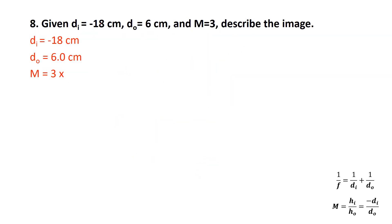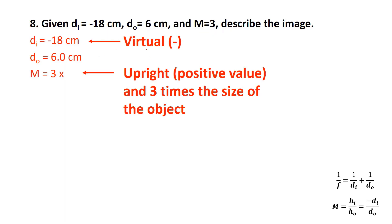Additional information: If given DI = −18 cm, DO = 6 cm, and M = 3, describe the image. The negative DI tells me it's virtual. The positive magnification tells me it's upright — and upright and virtual always go together. The magnification of 3 means the image is 3 times the size of the object. Also, 18 is 3 times 6, so mathematically this is consistent.